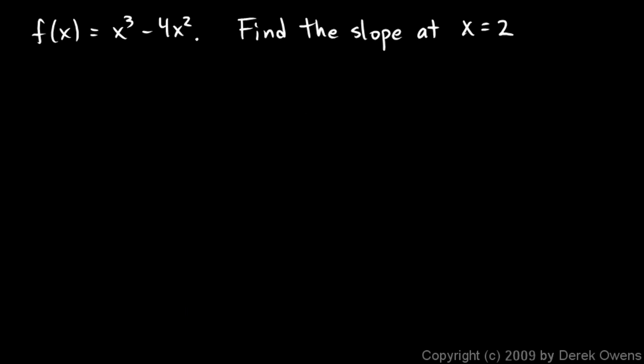Okay, here's another example. f of x is x cubed minus 4x squared. Find the slope at x equals 2. And we'll do this on the calculator by typing nDerivative x cubed minus 4x squared comma x comma 2. And let's see what we get.